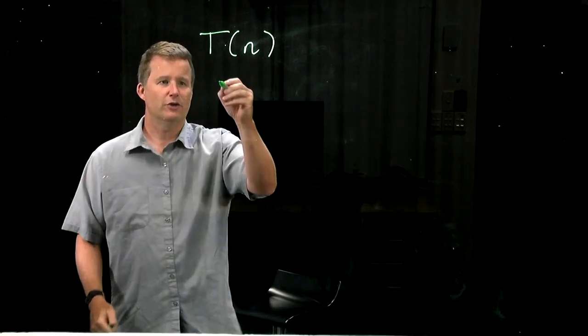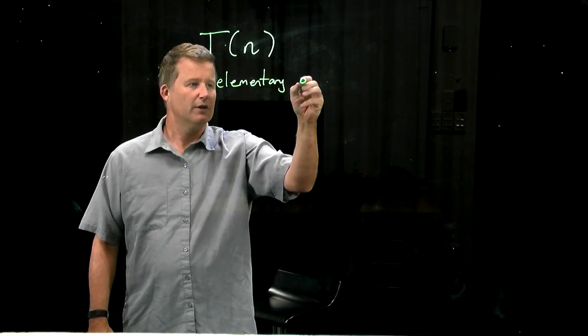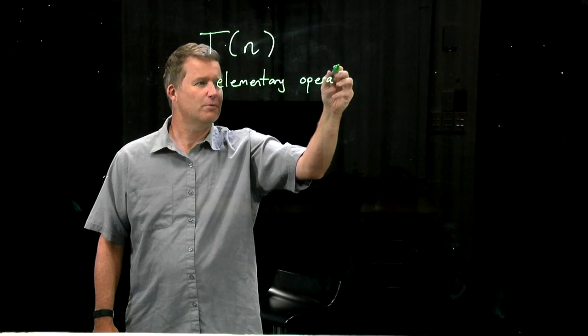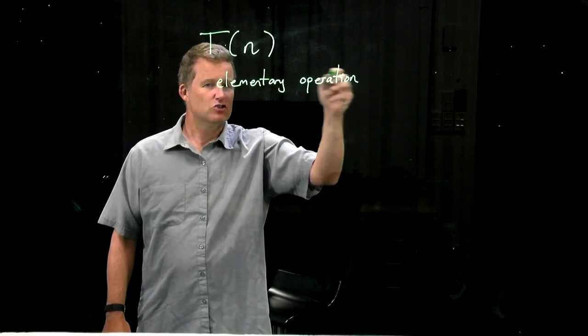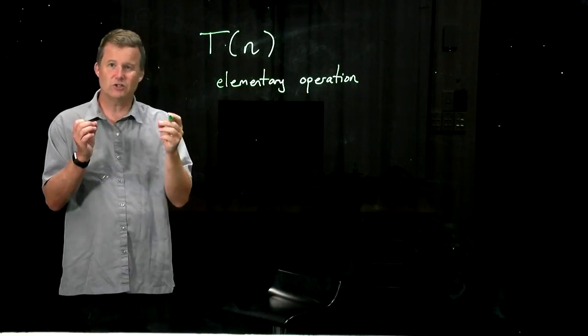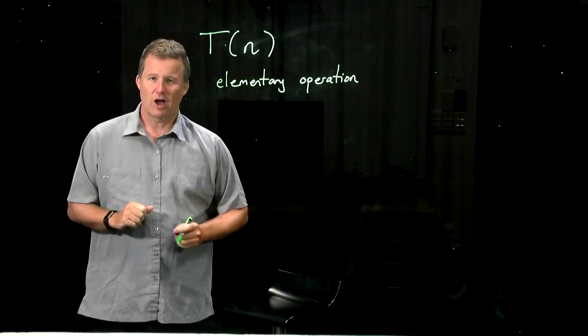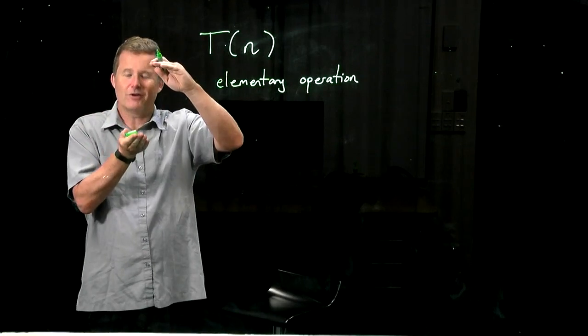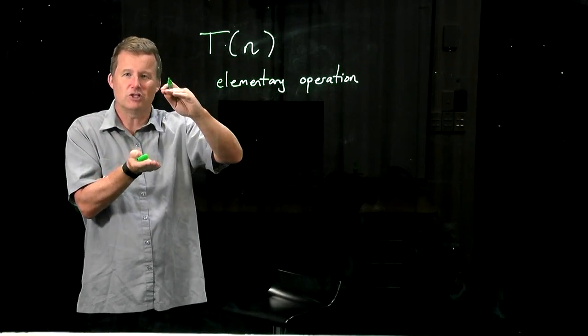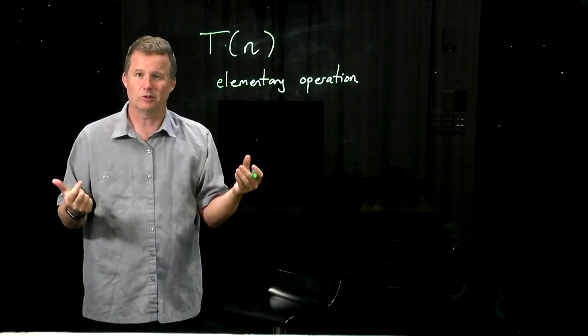So the key idea we're going to use is what's called an elementary operation. Now this term just means any type of operation which when translated into code is going to be performed in some fixed amount of time. We don't care how long, as long as there's an upper bound on how long it will take for such an operation. And that number does not depend on the input size.